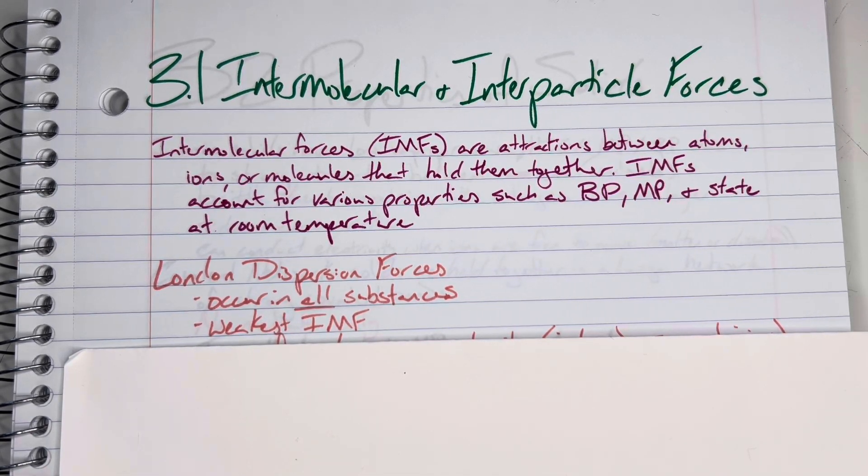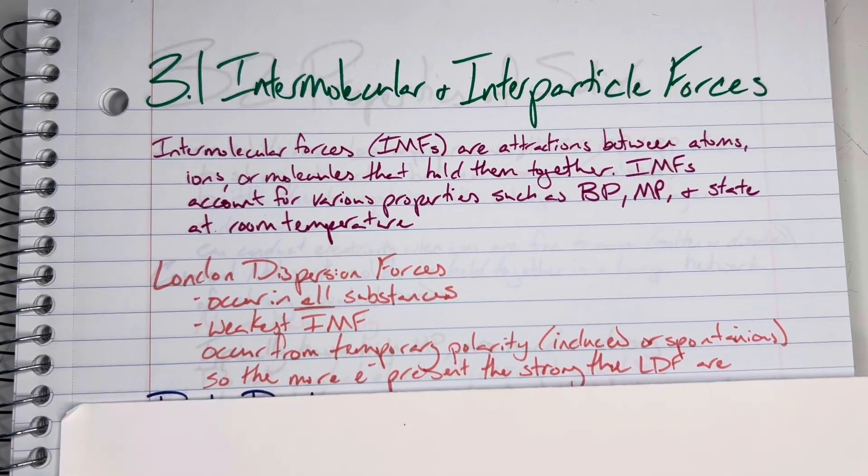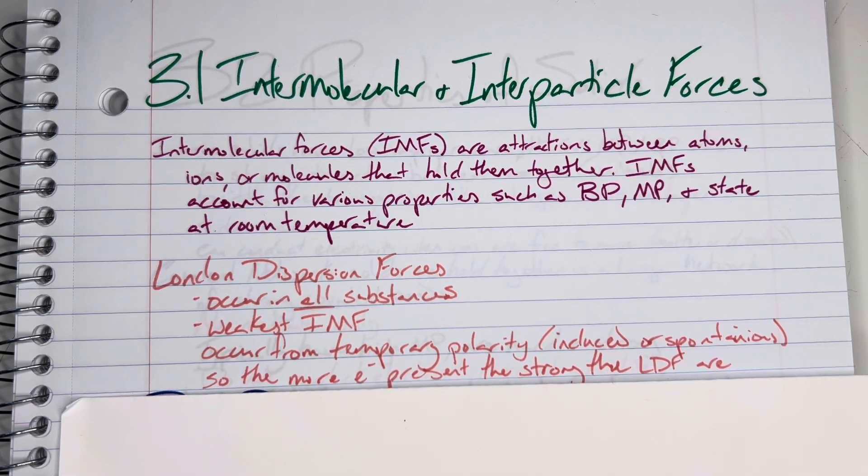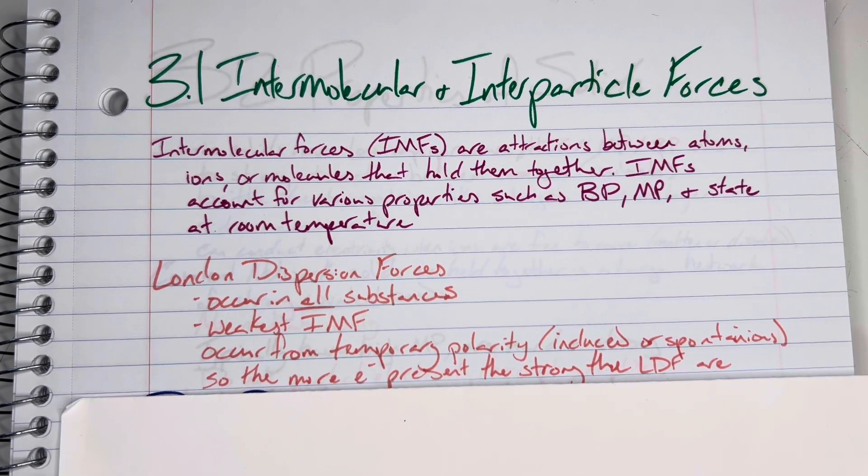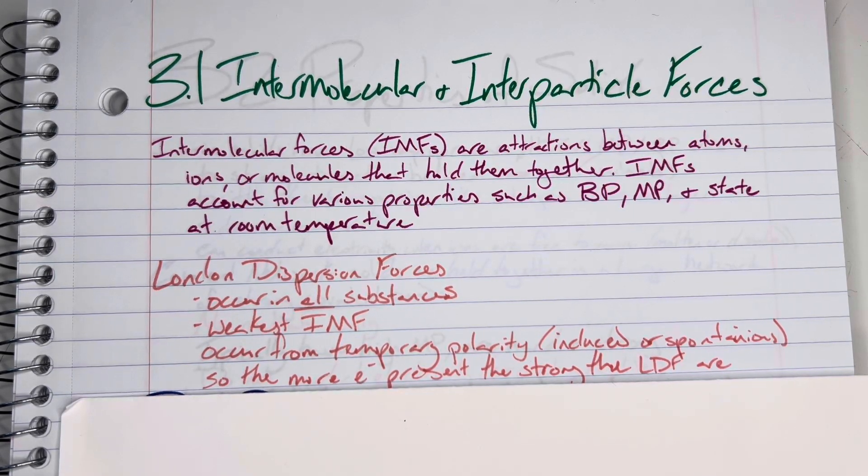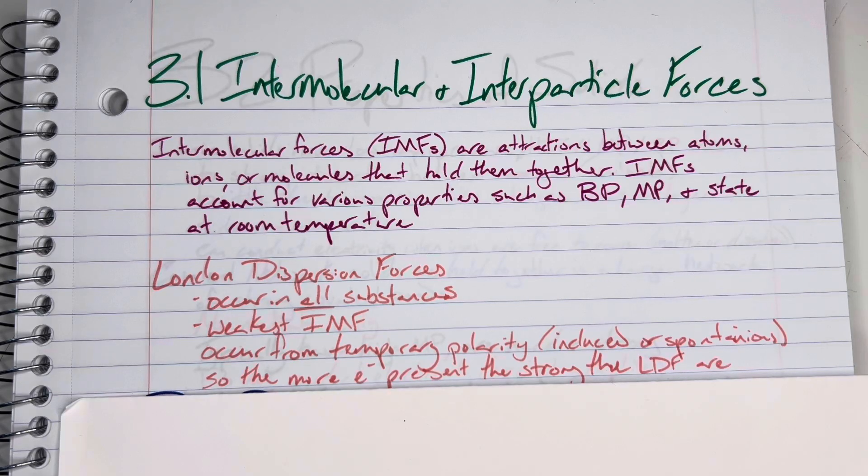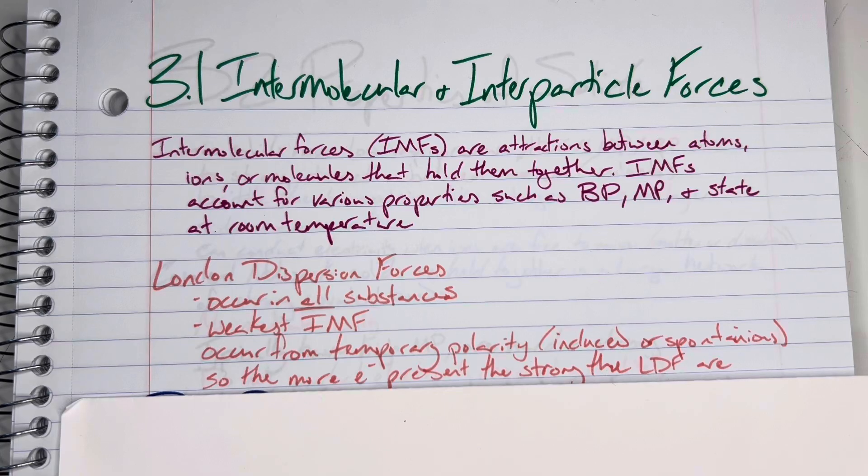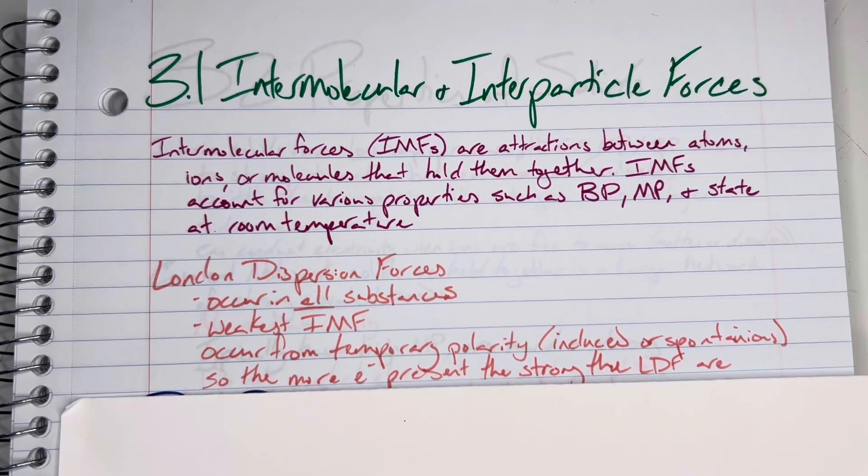They are the weakest type of intermolecular force, and they occur based off of a temporary dipole or temporary polarity, either induced or spontaneous, where the electrons just happen to be on one side of the atom, the molecule, whatever, at a particular time. They happen to be more on one side than the other. That temporary slight increase in charge, or decrease in charge one area over the other, that is what London dispersion forces rely on, are those temporary, very small dipoles.